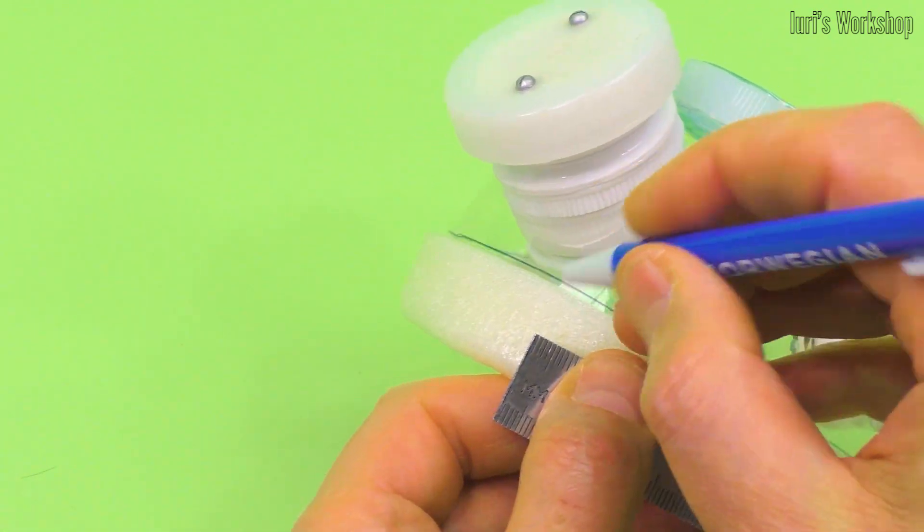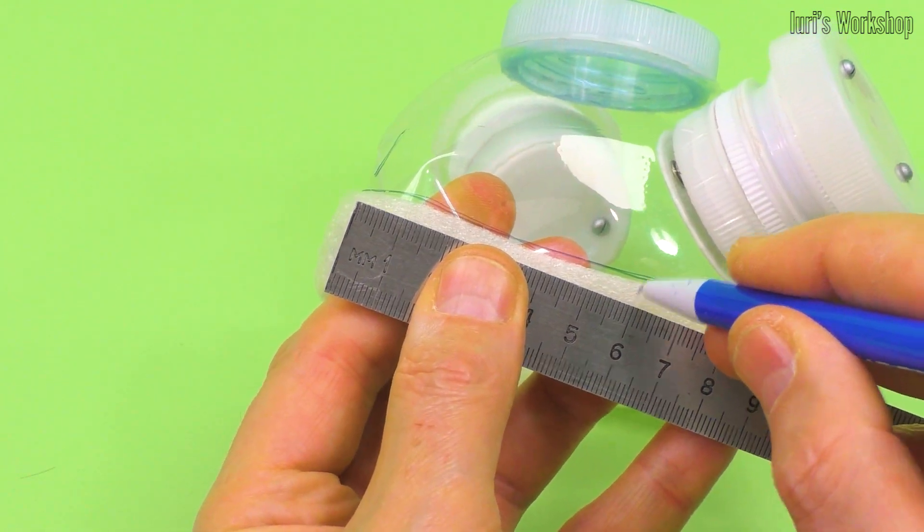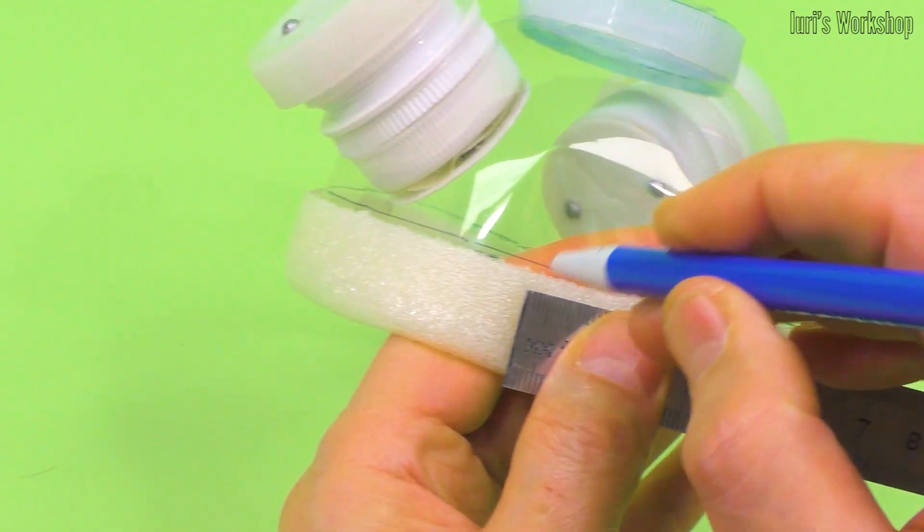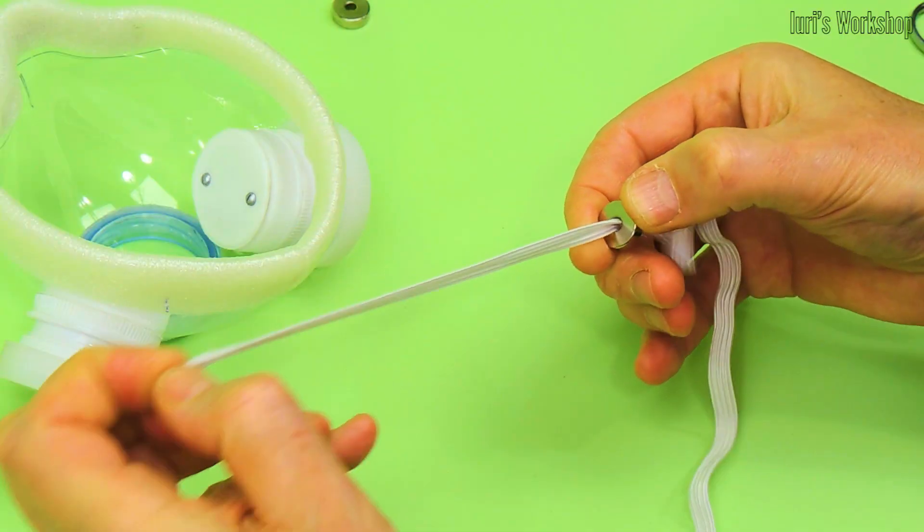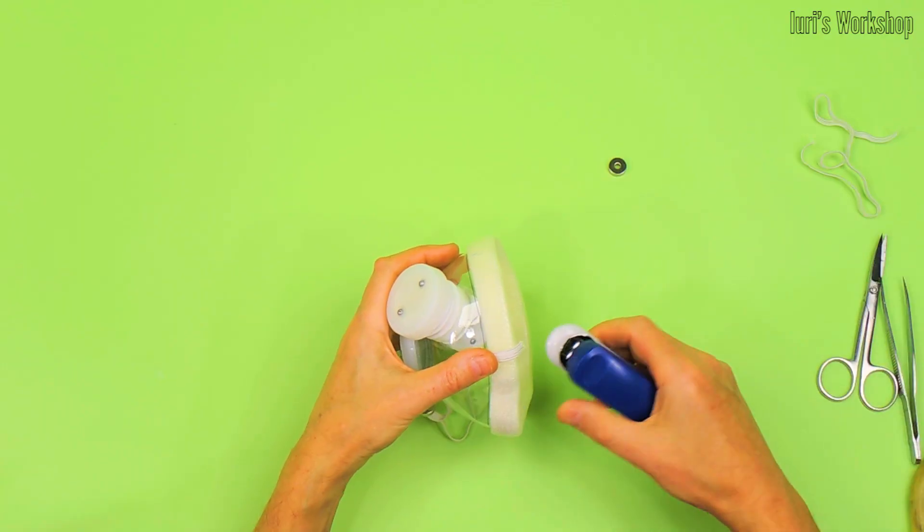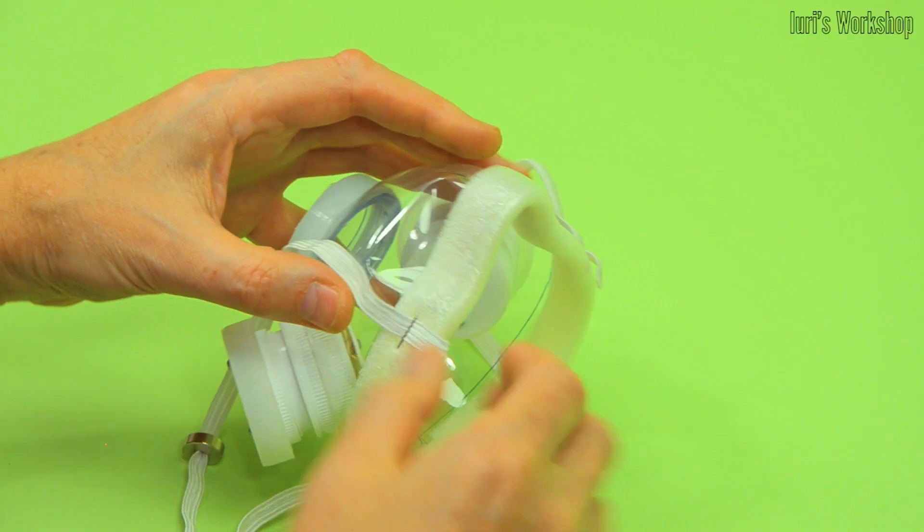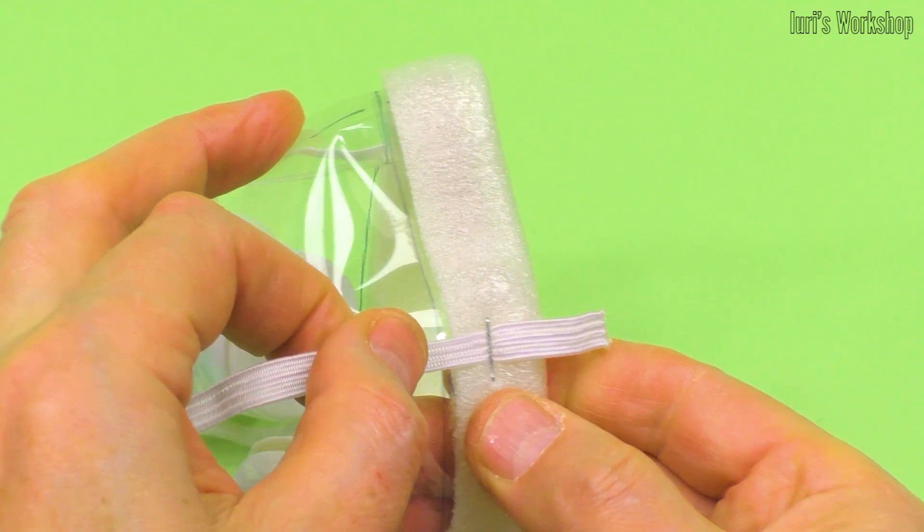And this is how I mark the places where the elastic bands are attached. Neodymium magnets make the mask easy to operate. And this attachment allows you to easily adjust the tension of the elastic bands.